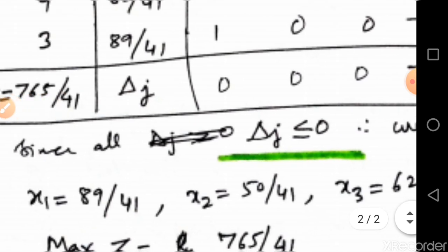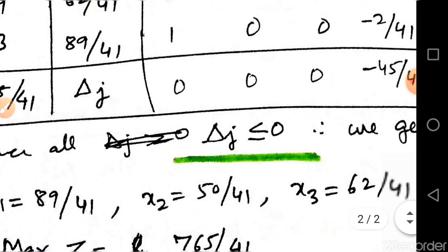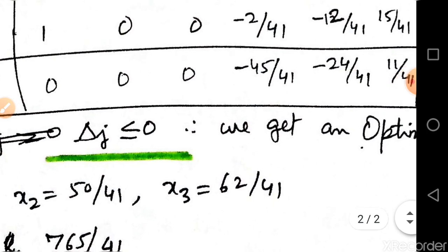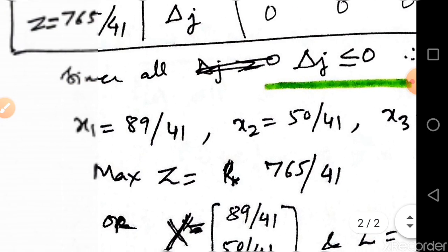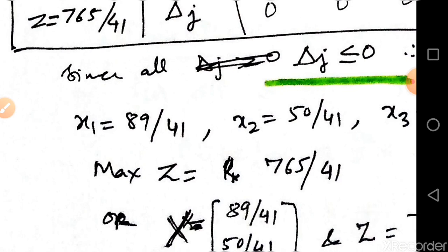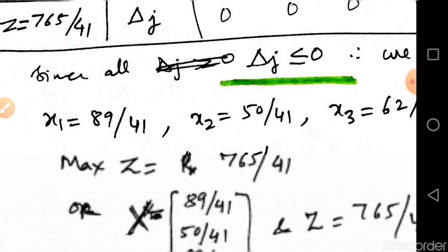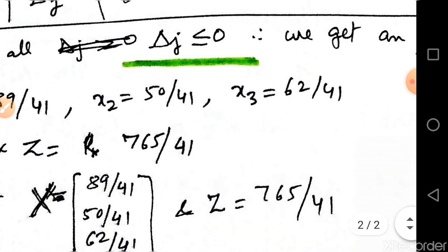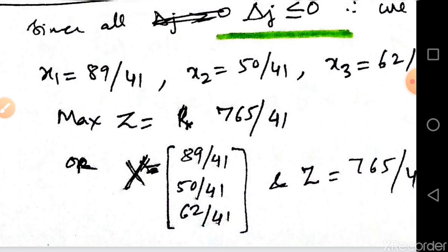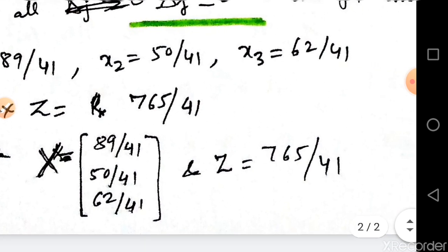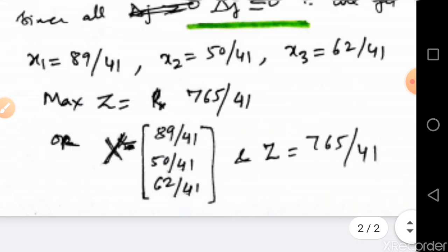Since all delta_j are less than or equal to 0, we have reached the optimal solution. The optimal solution is: x1 equals 89/41, x2 equals 50/41, x3 equals 62/41, and the maximum value of Z is 765/41.